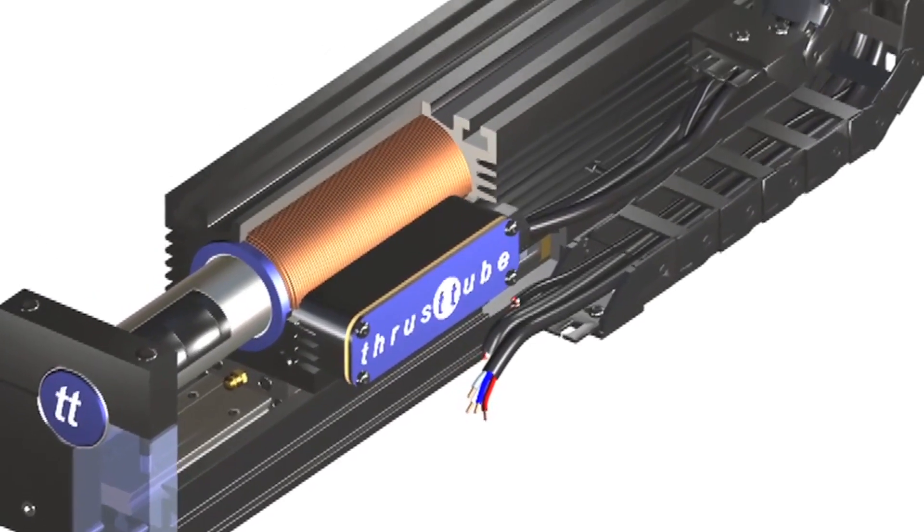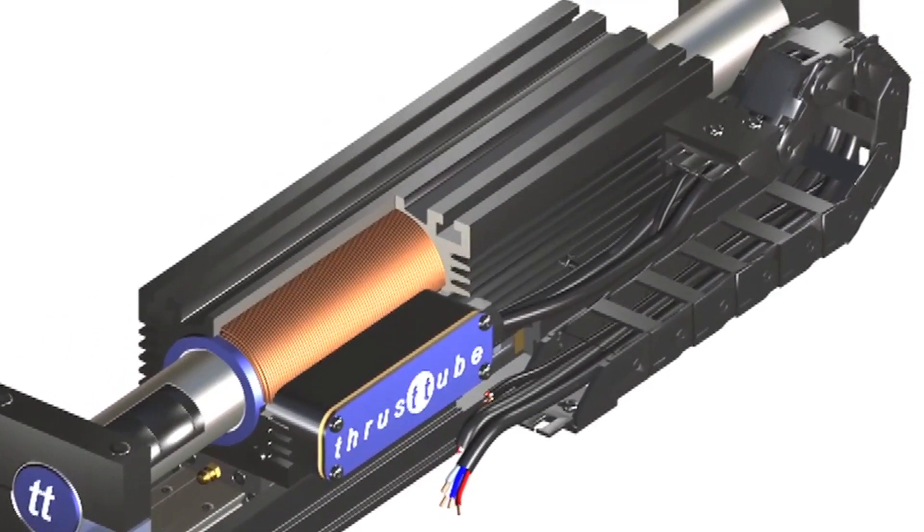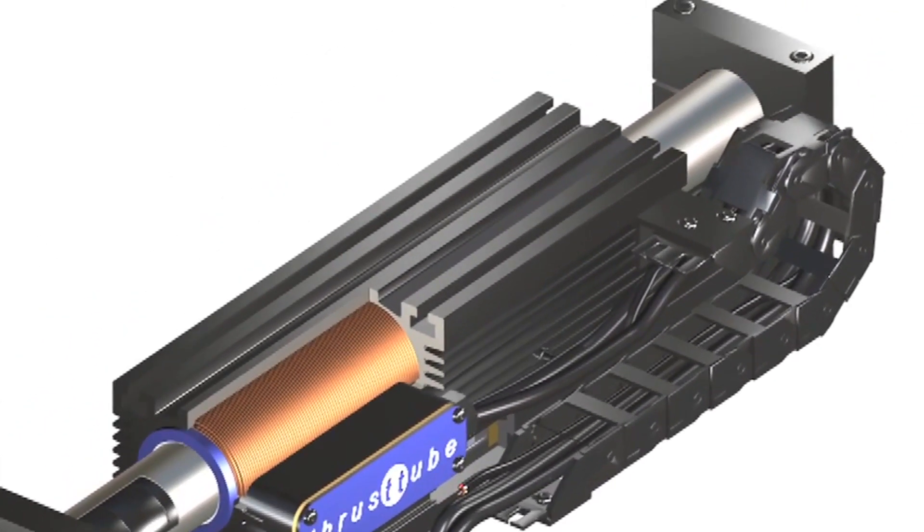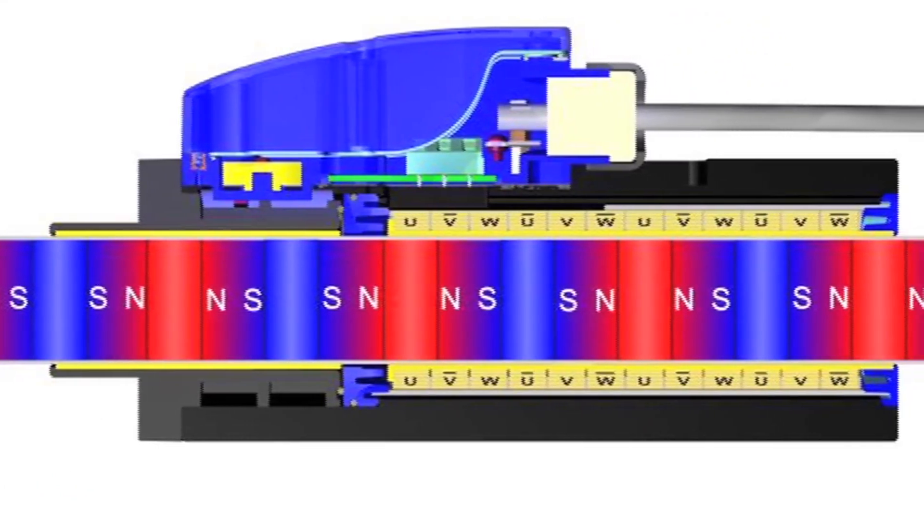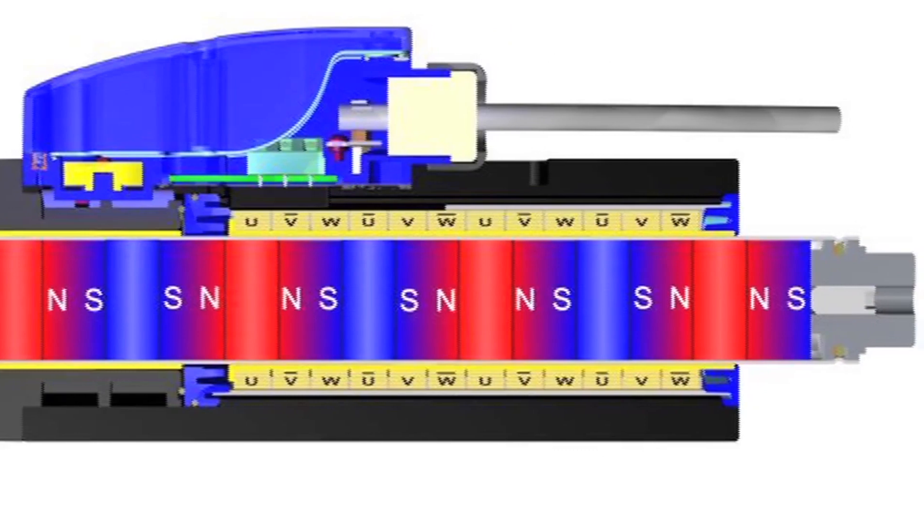Our motor consists of a magnet rod and a forcer, where all the magnetic forces are in balance, meaning that movement is very smooth with little cogging and no attractive forces.